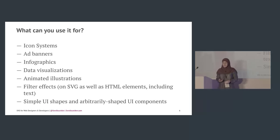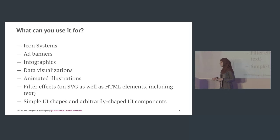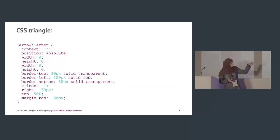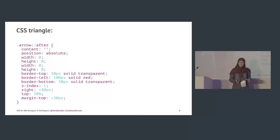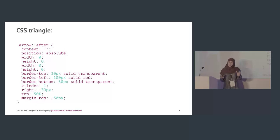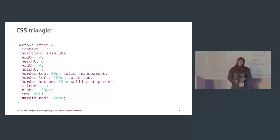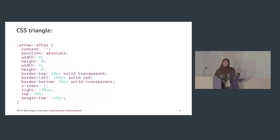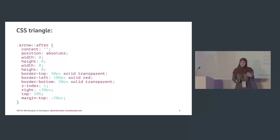SVG can and should be used to create simple UI shapes and arbitrarily shaped UI components. I recently cheated on a client project and created a triangle using CSS — using the old border trick. Sometimes if you're thinking about productivity it might be worth it, but CSS shapes are not real shapes. They're fake shapes — not semantic, not accessible. They're just illusions.